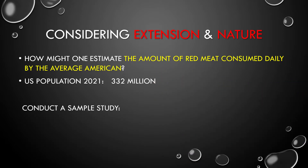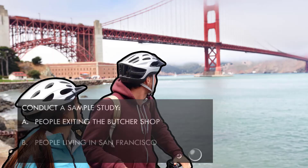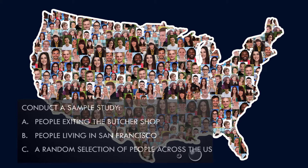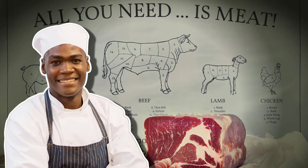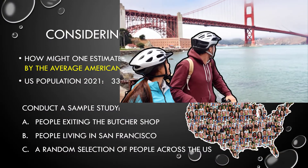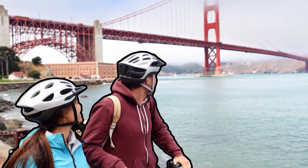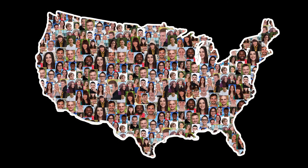So let's conduct a sample study. Who do we poll? A: people exiting the butcher shop. B: people living in San Francisco. Or C: a random selection of people from across the country. It's not A or B. We can predict that A leads to an overestimate of red meat consumption because butcher shops cater to meat-eating segments of the population. B would likely lead to an underestimate, given that San Francisco probably has a higher-than-average number of health and environmentally conscious vegetarians and vegans. C gives us the best chance of capturing a true cross-section of Americans.